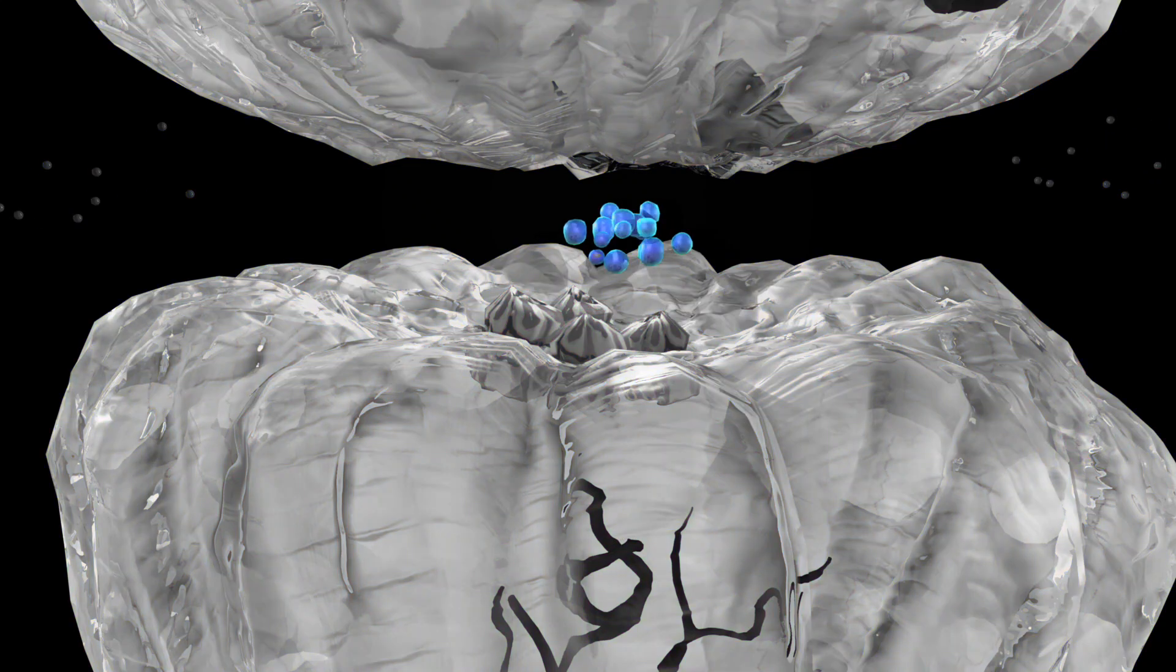This is gamma-aminobutyric acid, or GABA for short. It is the inhibitory neurotransmitter of the nervous system. That means it is used to reduce the transmission of the electrical signal throughout the nervous system.